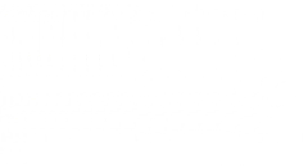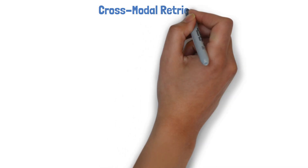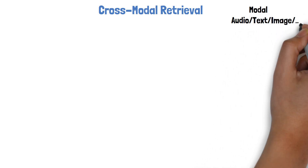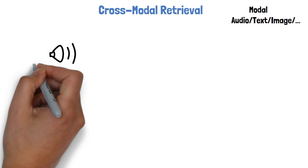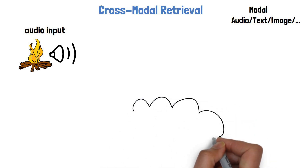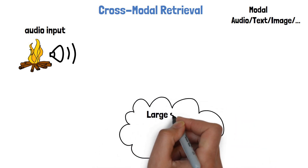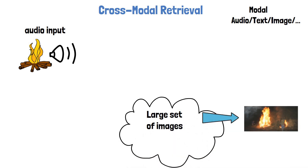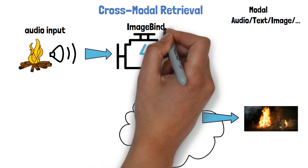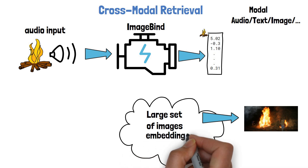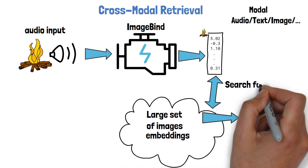Let's take a look at the power it gives us, starting with cross-modal retrieval. By modal the meaning is a type of data, so image is a modality and text is a modality for example. Cross-modal retrieval is the process of providing a query input from one modality — say the sound of a crackle of a fire — and given a usually large set of data from another modality, for example images, to retrieve an image that is a good fit to the query audio, like the image of fire. ImageBind helps with that by first running the model on the input audio, which yields an embedding, and the large set of images can be stored with their embeddings so we can search for the image with the most similar embedding.